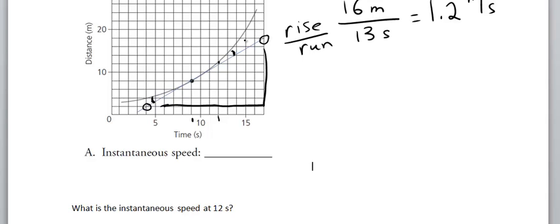So I'd like you to try it. Draw a tangent line at about 12 seconds. And you know that the object is going faster here. So you would expect the slope to be greater.